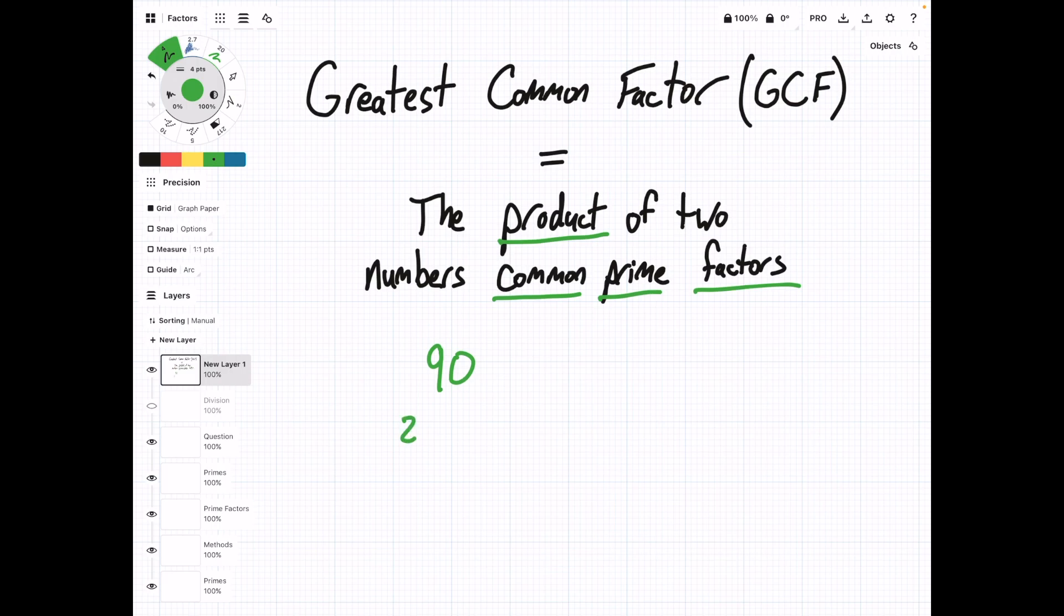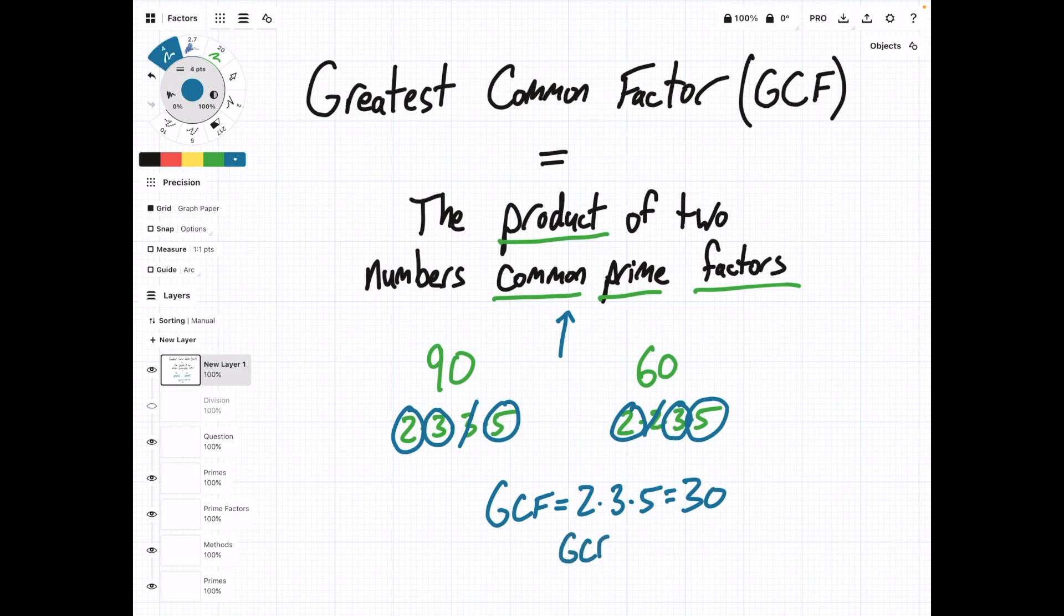So if we do a quick little example here, take our number 90. We know that the prime factors are 2, 3, 3, and 5. And then let's take another number, 60. I'm going to tell you that the prime factors are 2, 2, 3, and 5. And now, in order to find the GCF of these two numbers, we can look at our definition. So we find the common prime factors: here's a 2, here's a 2, here's a 3, here's a 3, and here's a 5, and here's a 5. We ignore the ones that don't have a match, and then our GCF is equal to the common ones multiplied. So we're going to have 2 times 3 times 5 equals 30. So the GCF of 90 and 60 is 30.